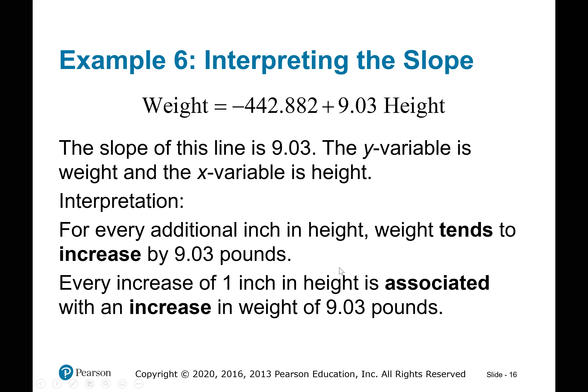Example 6: interpreting the slope. We have the regression equation for weight and height: weight = −442.882 + 9.03 × height. The slope of this line is 9.03. The y variable is weight and x variable is height.